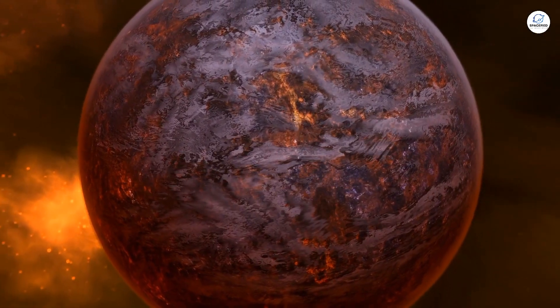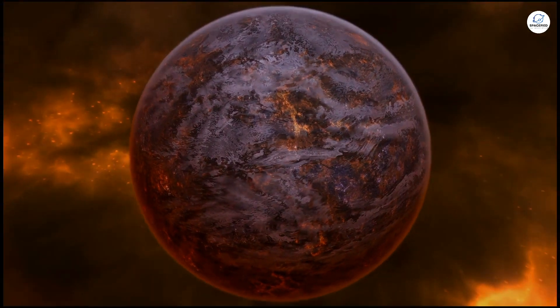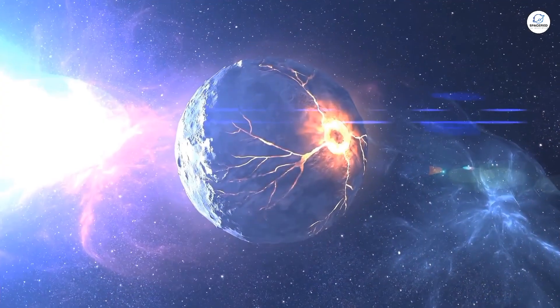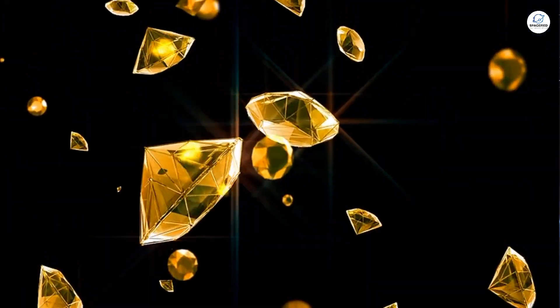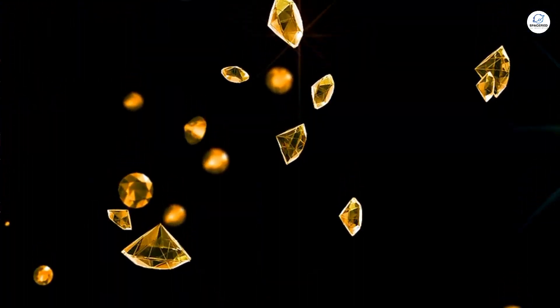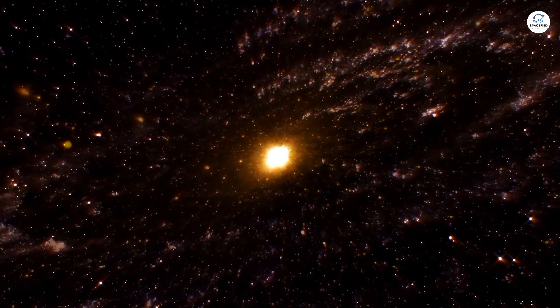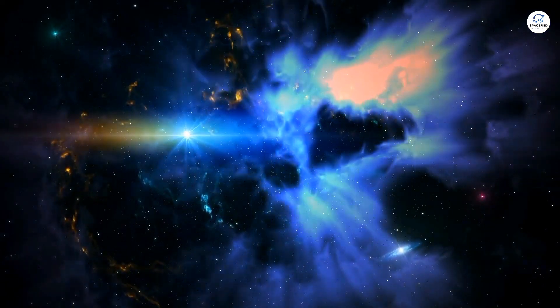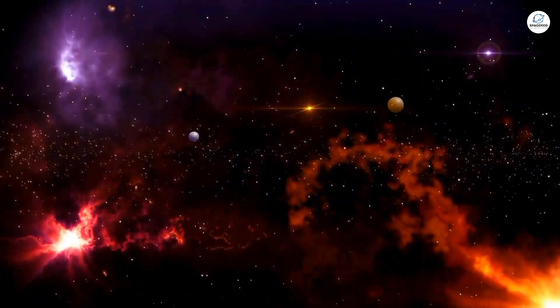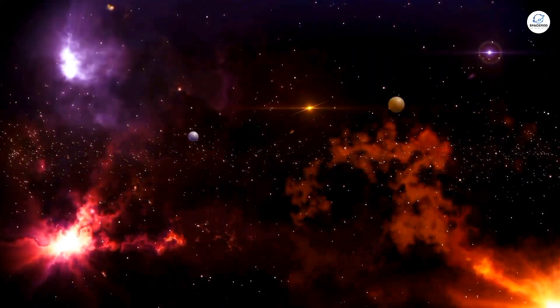Scientists believe it might be composed of exotic materials, things we've never seen before on any other planet. Could it be made of pure carbon, compressed into diamond-like structures? Or perhaps it's a world of super-dense metals, forged in the heart of a dying star? The possibilities are as fascinating as they are terrifying.